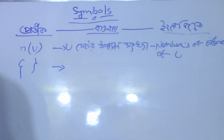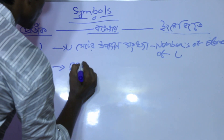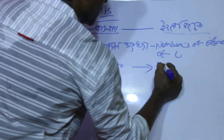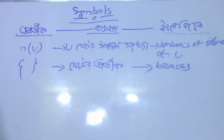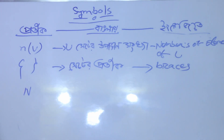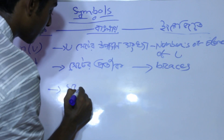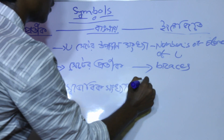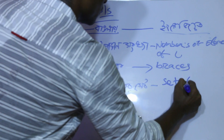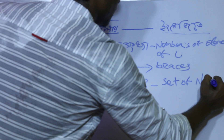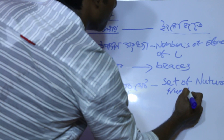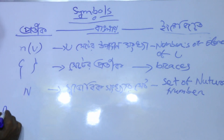1. I am going to say Satir Pratik — B-R-A-C-E-S, Braces. What is the set of natural numbers? The set of natural numbers — the English name. I am going to say Shavavik Shankar Set. Set of natural numbers — N-U-M-B-E-R. Set of natural numbers — we're going to start from.